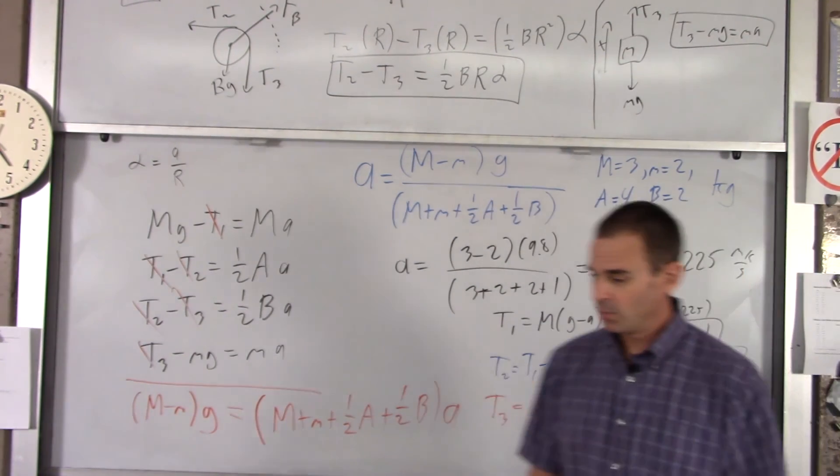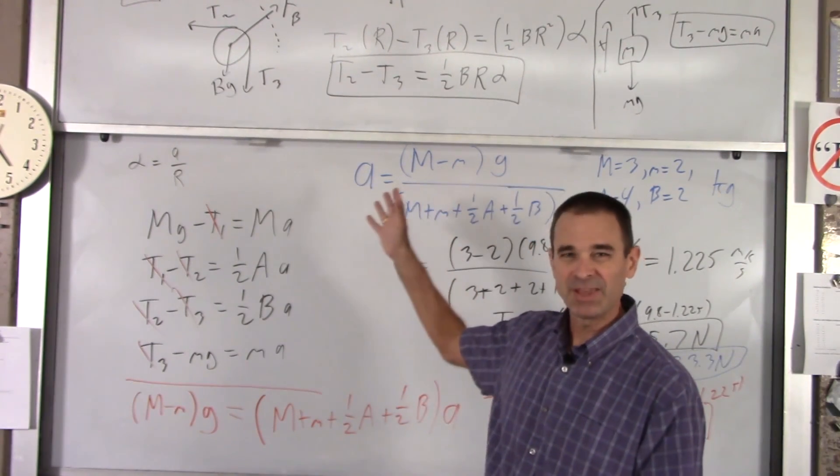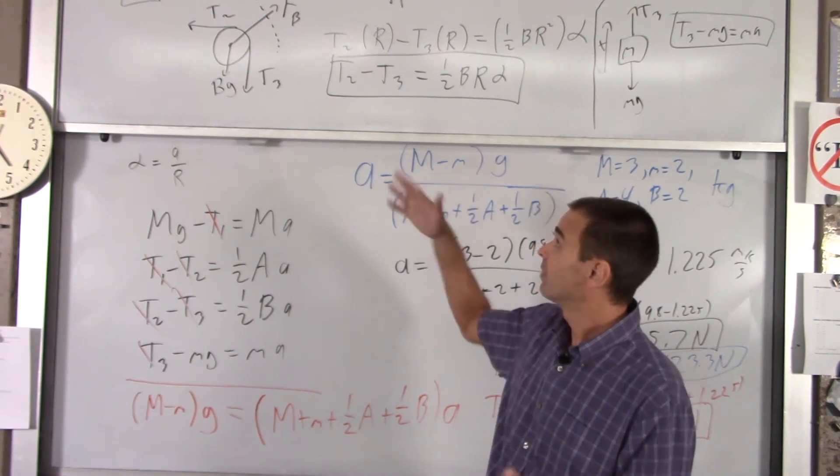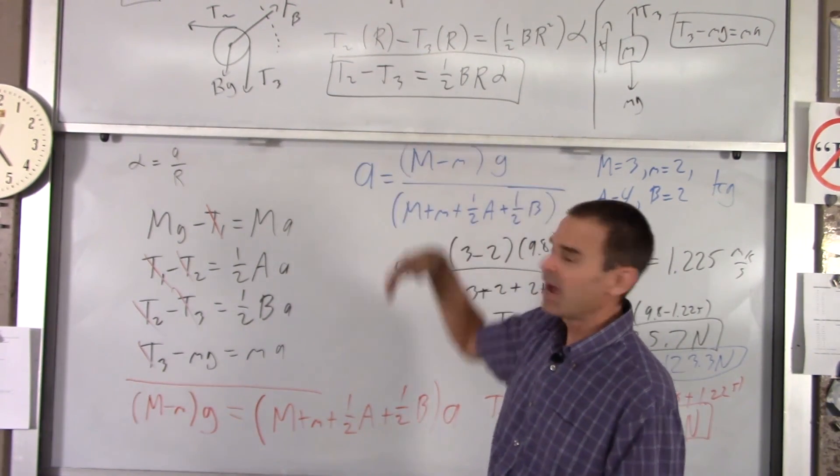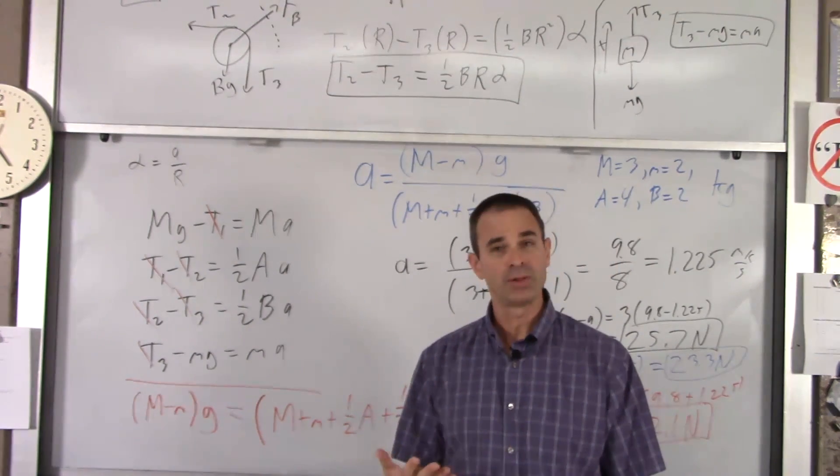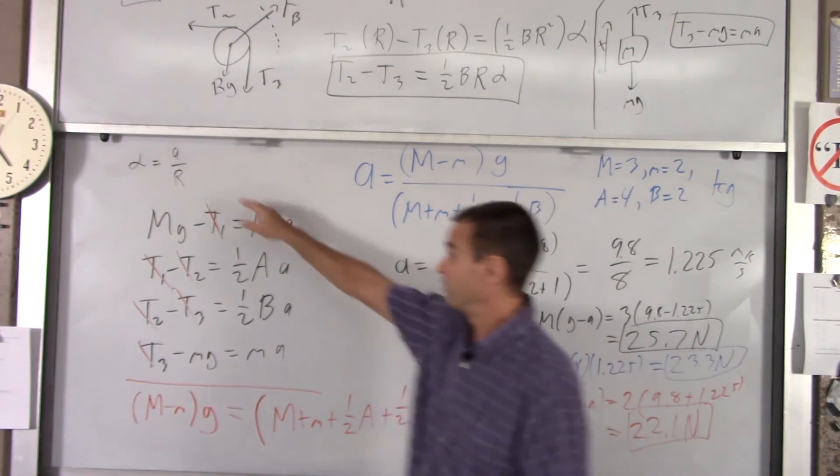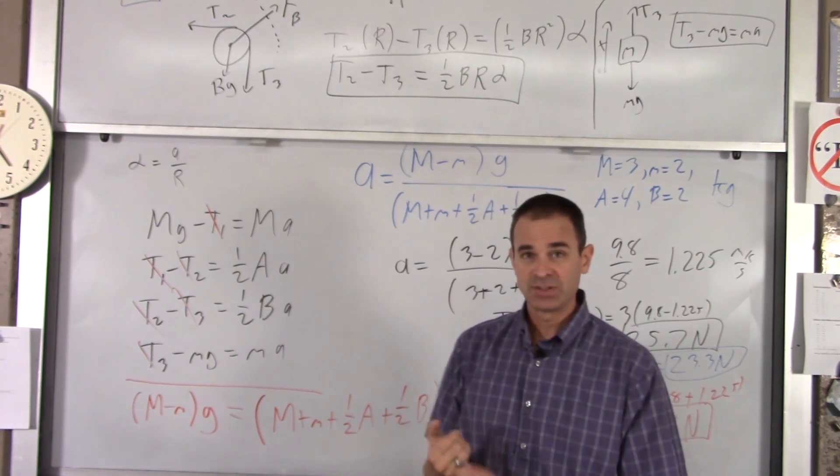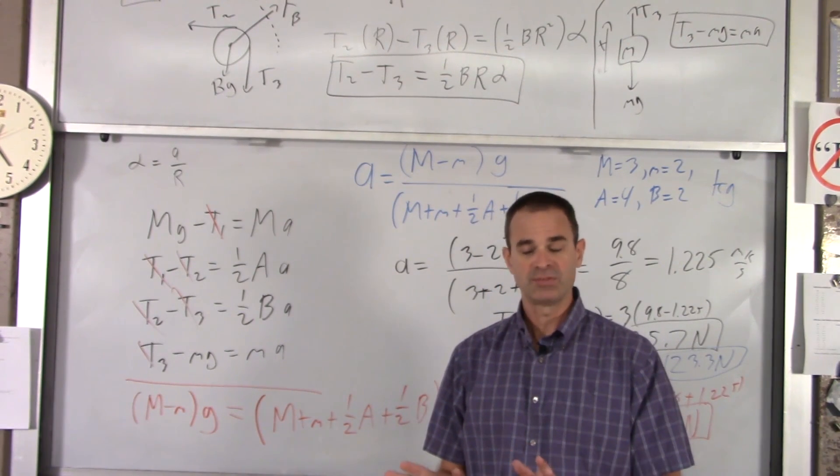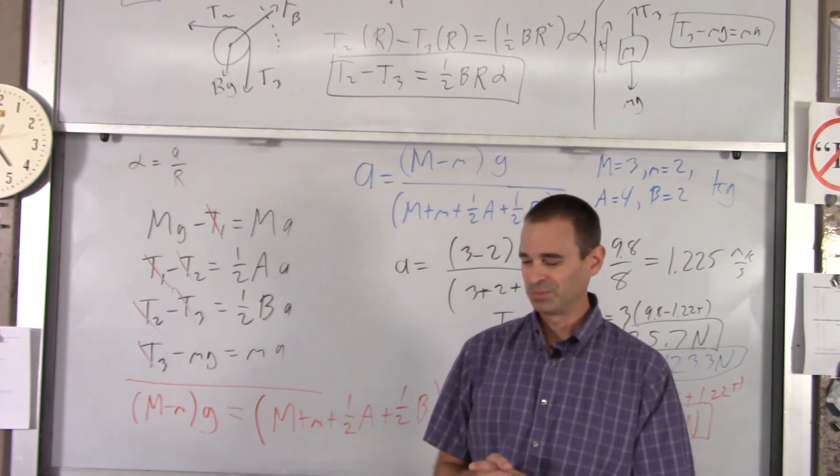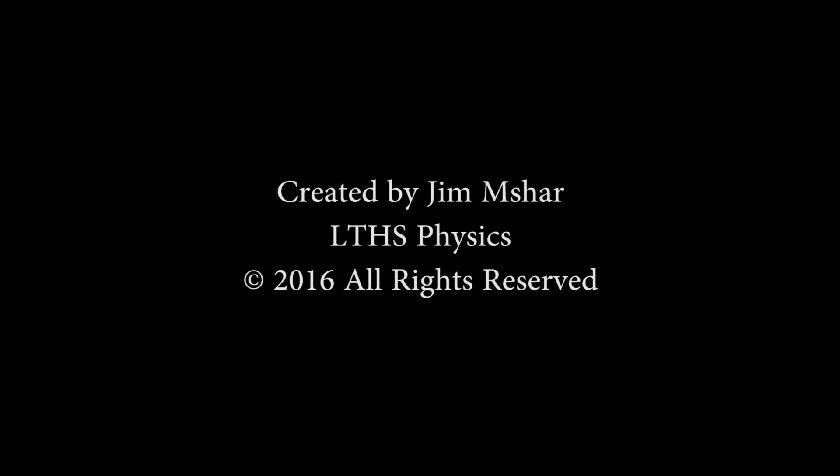That's a real quick and easy way to solve a pretty complicated system. We found the acceleration of the system. If you wanted to go find alpha, they'd have to give you the radius of each pulley. But we did find the acceleration of the system and we found all three parts of the tension that act in our system. I hope that was helpful. We'll see you next time.